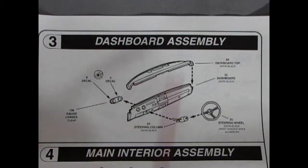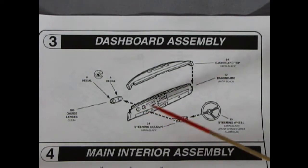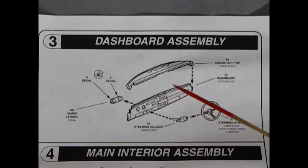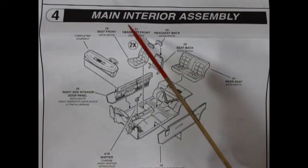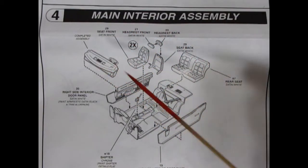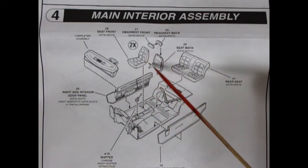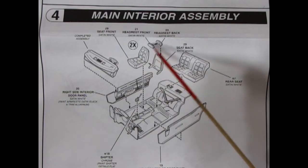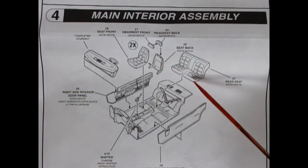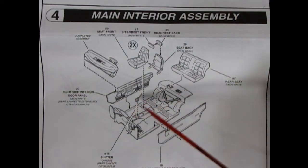Panel three here shows the dashboard assembly and you get a multi-piece dashboard, which is nice because you can get your brush in here, paint the details and then put the top on. So we have gauges with decals that go on the front of the dashboard, the top, the steering column and the steering wheel. Section four shows our main interior assembly. We've got our dashboard completed going into these separate door panels. The bucket seats for the front get glued together so you get the front and the back as well as the headrest and the rear seat, which covers over that nice brace. There is a shifter in here as well.